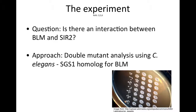Our experiment asks the question: is there an interaction between BLM and SIR2? In budding yeast, there is a homologue of the BLM gene called SGS1. A short review of the scientific literature suggests that the BLM gene may interact with a gene called SIR2, which is present in both humans and yeast.